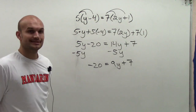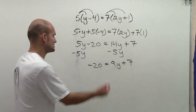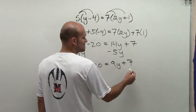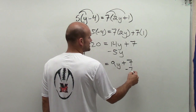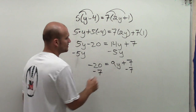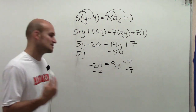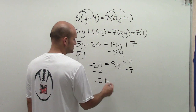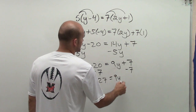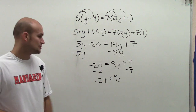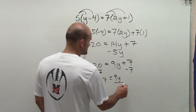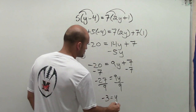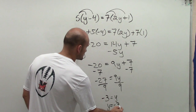Now what I need to do is just use my inverse operations. Negative 20 equals 9y plus 7. Remember two-step equation problems: first, always undo addition and subtraction. So I'll undo addition by subtracting 7 using the subtraction property of equality, which gives me negative 27 equals 9y. Now to undo multiplication by 9, I'm going to divide by 9 on both sides, and I get negative 3 equals y, or y equals negative 3.